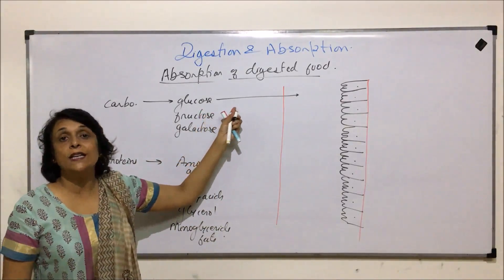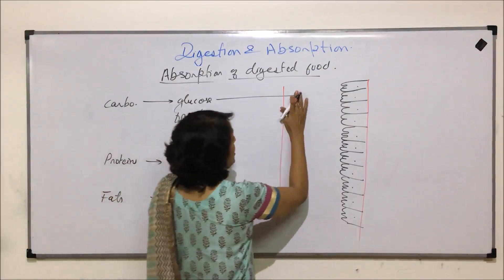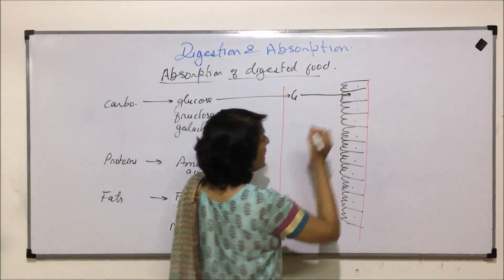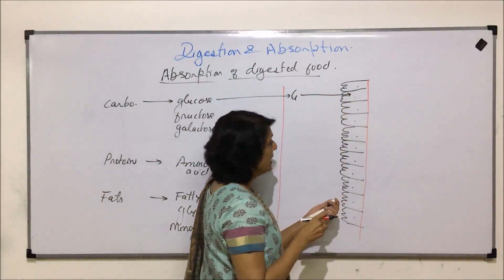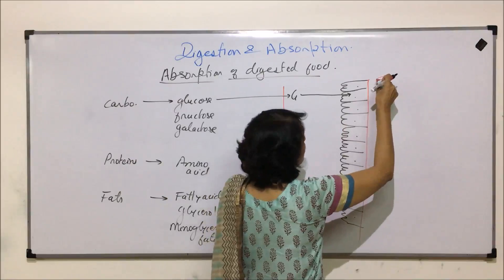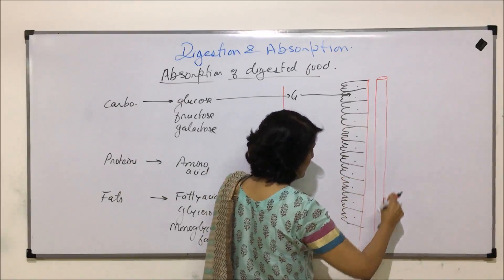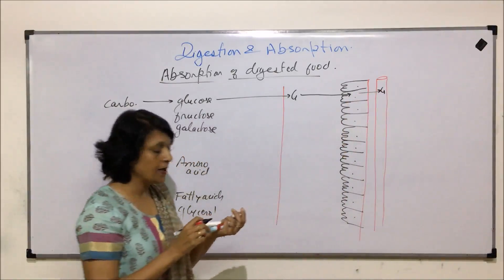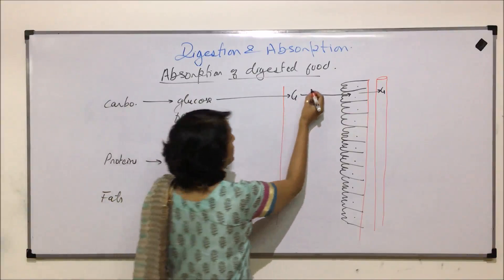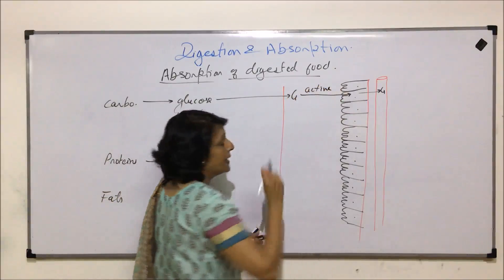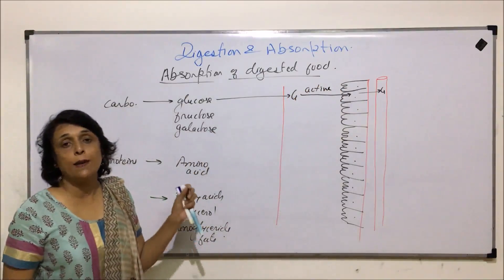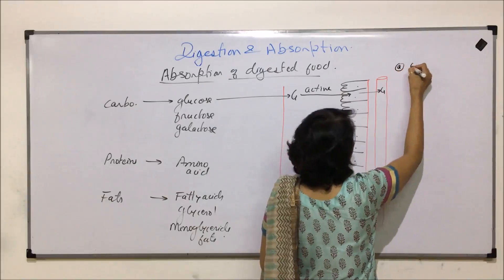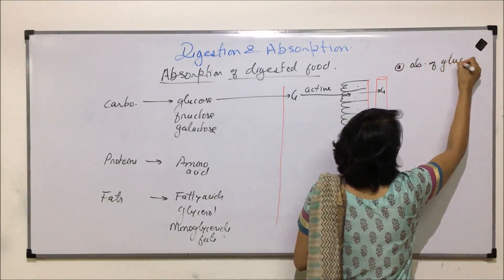Glucose absorption is an active process. This glucose, which is in the lumen, gets absorbed and finally it is poured into the blood vessel. The process by which this absorption takes place is active. So here we will write down absorption of glucose.